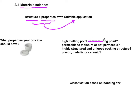Definitely we want it to have a high melting point, since you want to be able to melt something ionic or metallic in it. Should it be permeable to moisture or not? Definitely not — we don't want it to be permeable to moisture. You don't want water to come in; rather, we want to evaporate it out. Should it have a highly structured or loose packing structure? Definitely we want it to be highly structured — we don't want it to become amorphous and melt away.